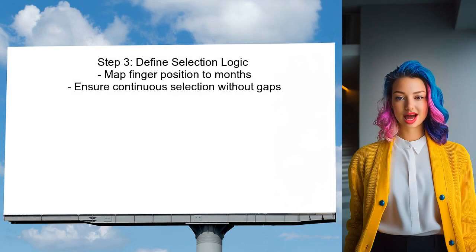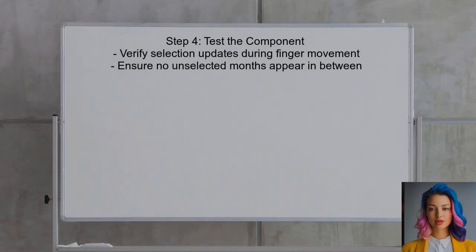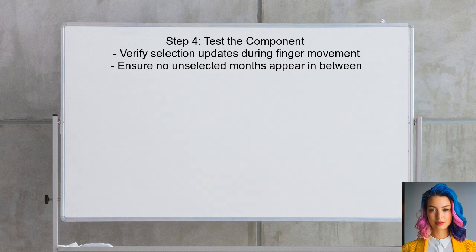Now, define the logic for selecting months. This involves mapping the finger's position to the corresponding months and ensuring that only full months are selected without any gaps. Finally, test the component to ensure it behaves as expected, including checking that the selection updates correctly as the user drags their finger across the screen.